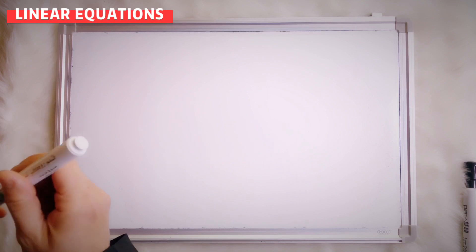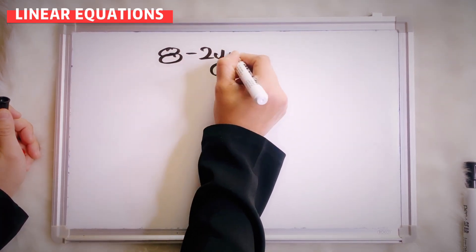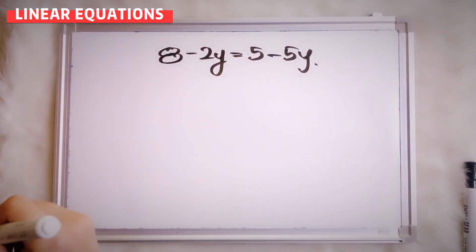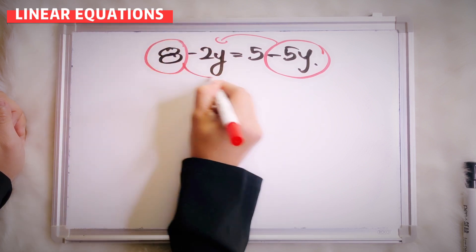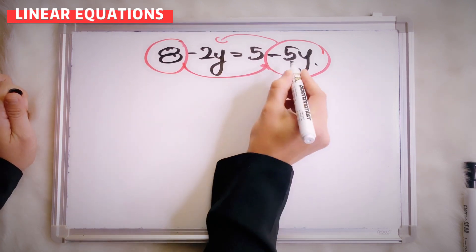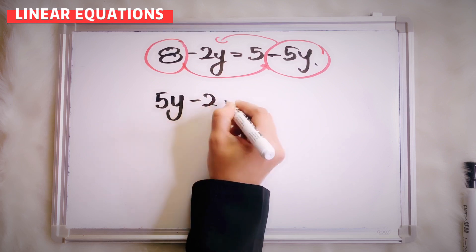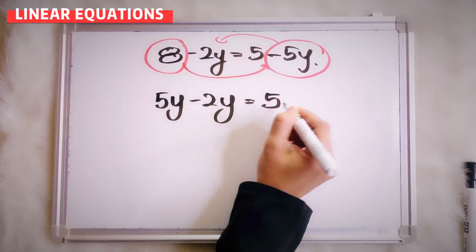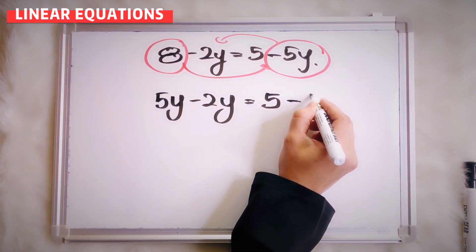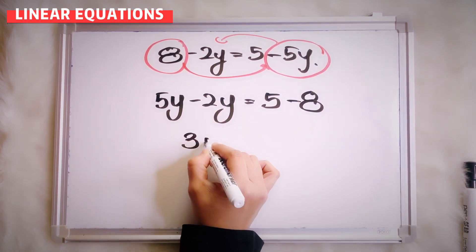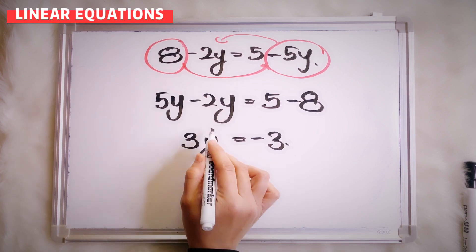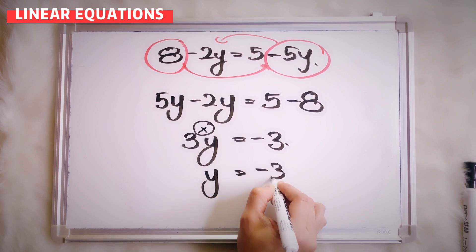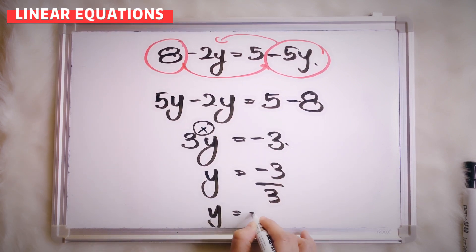How about if I give you 8 minus 2y equals to 5 minus 5y? Put the y terms on the left side and the numbers on the right side. Negative 5y transfers as positive 5y, and positive 8 transfers as negative 8. So 5y minus 2y equals to 5 minus 8, giving us 3y equals to negative 3. The opposite of multiply is divide, so negative 3 divided by 3 means y equals to negative 1.